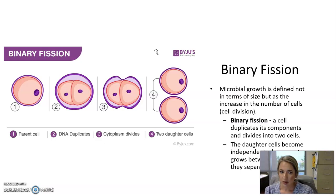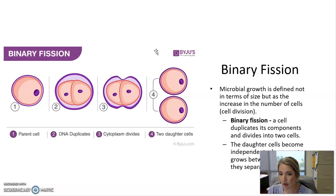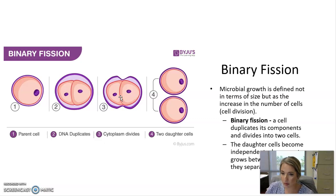Assuming bacteria have the right environment to grow, they will go through something called binary fission cycles. If bacteria have access to nutrients, moisture, a stable temperature, and a good pH, they will grow and divide. This process of going through division cycles and producing more of themselves is known as binary fission. It is similar to mitosis in human cells — one bacterial cell duplicates itself into two, then two divide into four, four into eight, and so on.